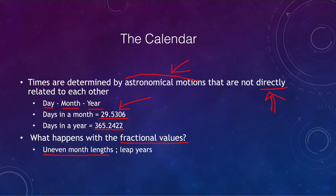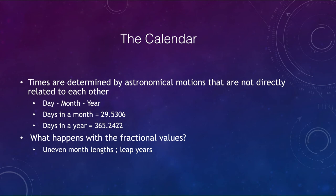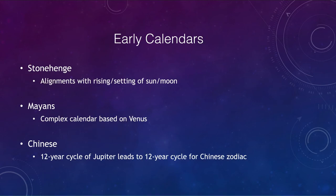We have to put those extra days somewhere, so we make some months a little longer — that's why some have 30 and some have 31 days. Leap years address the fractional year of 365 and almost a quarter days; we add a leap year almost every four years. We'll look at that in more detail, but first let's look at some early calendars.